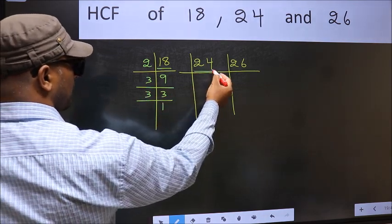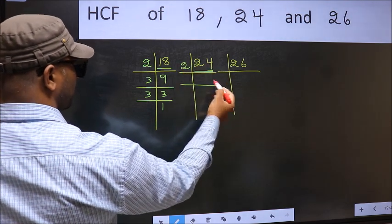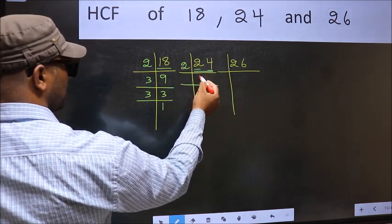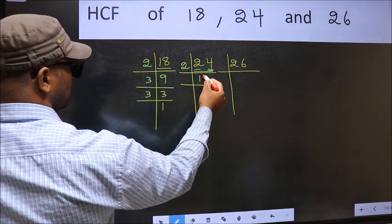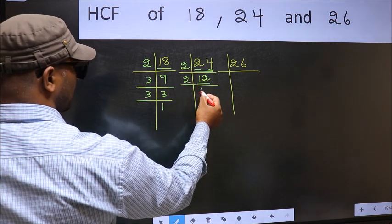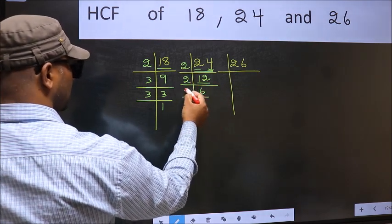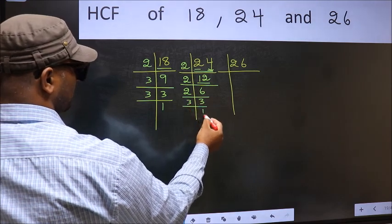The other number 24, last digit 4, even, so take 2. First number 2, when do we get 2 in 2 table? 2 times 1. The other number 4, when do we get 4 in 2 table? 2 times 2. Now, 12 is 2 times 6. 6 is 2 times 3. 3 is a prime number, so 3 times 1.